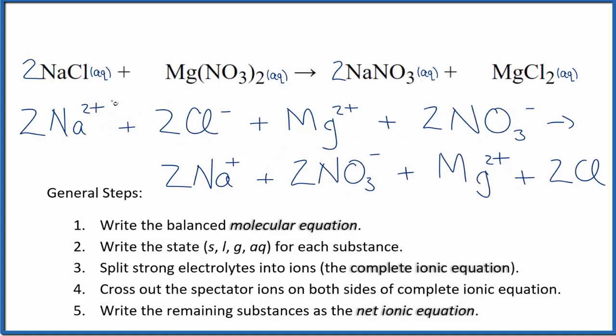If we crossed out spectator ions, we have two sodium ions in the reactants and the products. Two chloride ions, two chloride ions. Two magnesium ions here in the reactants, two in the products. Finally, two nitrate ions, two nitrate ions. We've crossed everything out. Everything's a spectator ion. So there is no reaction.